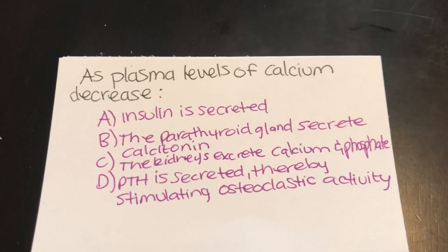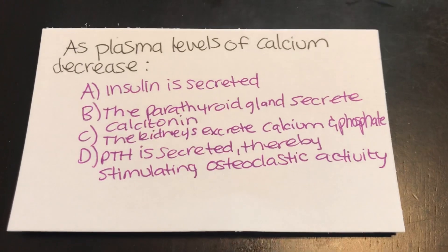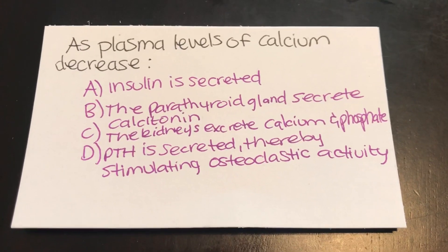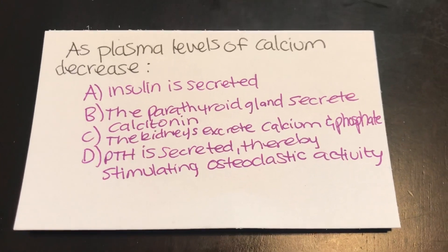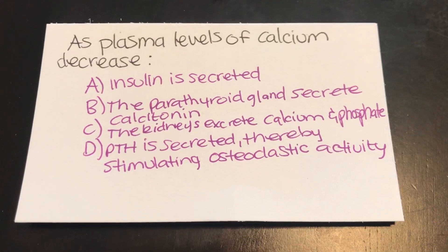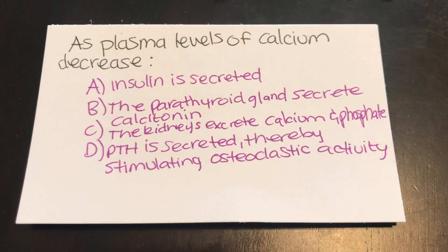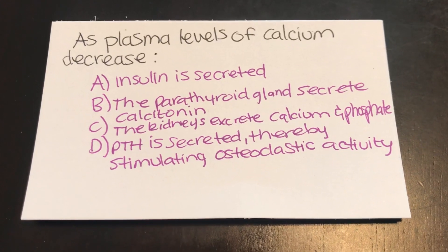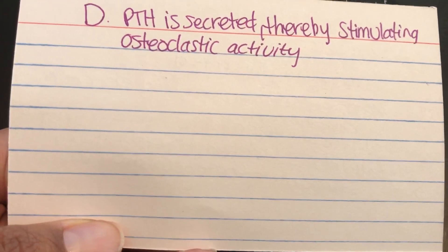As plasma levels of calcium decrease: A, insulin is secreted. B, the parathyroid glands secrete calcitonin. C, the kidneys excrete calcium and phosphate. Or D, PTH is secreted, thereby stimulating osteoclastic activity. Answer: D, PTH is secreted, thereby stimulating osteoclastic activity.